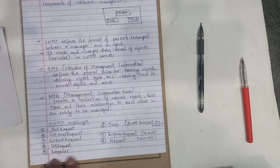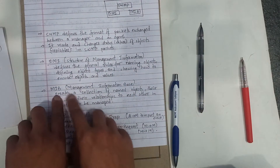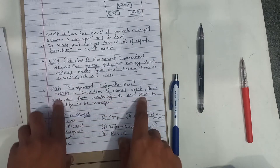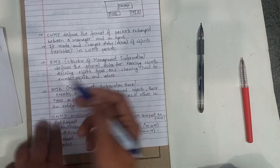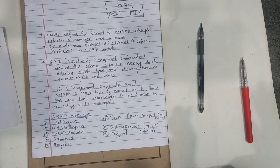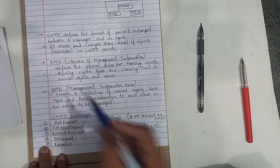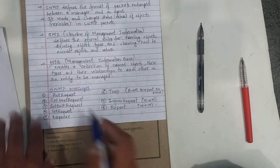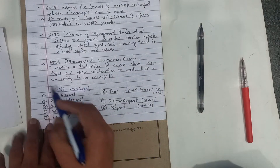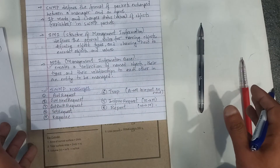SMI defines rules for naming types and encoding objects and values. MIB — Management Information Base — creates a collection of named objects, their types, and their relationships to each other in an entity to be managed.